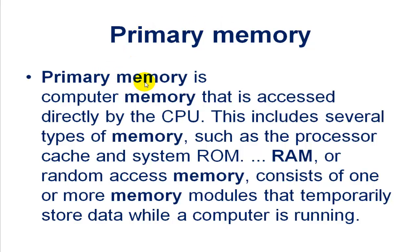First of all, we learn about primary memory. Primary memory is computer memory that is accessed directly by the CPU. This includes several types of memory, such as the processor cache, system ROM, and RAM — Random Access Memory.